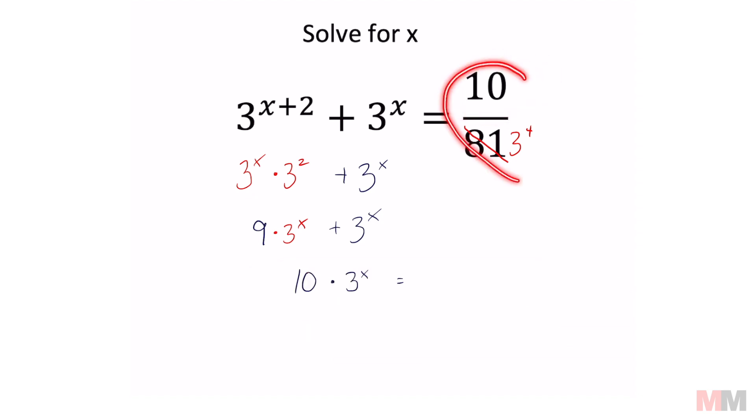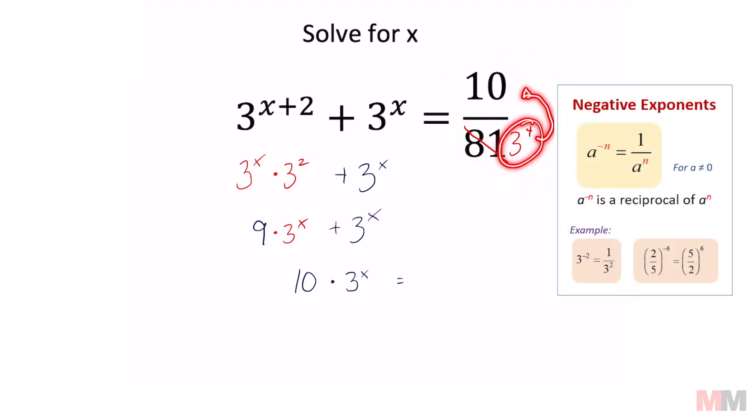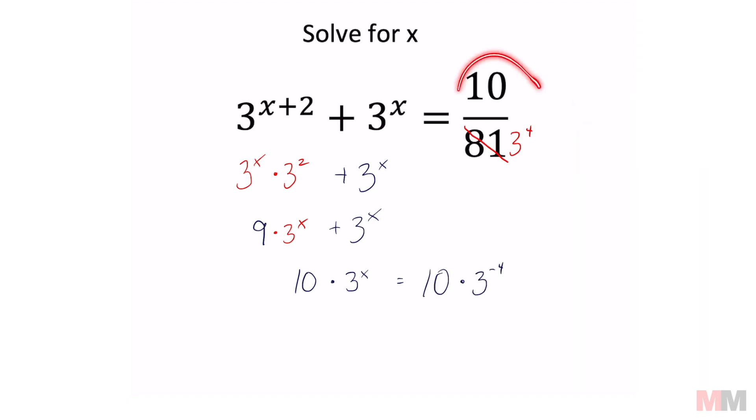We are almost there. If I want to write this without a ratio, I can just move this to the numerator by making the exponent negative. So that would be 10 times 3 to the negative fourth power, which is the same as this expression.